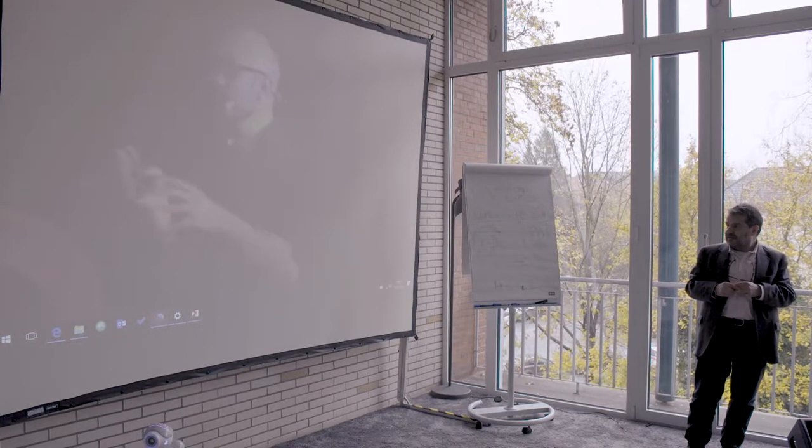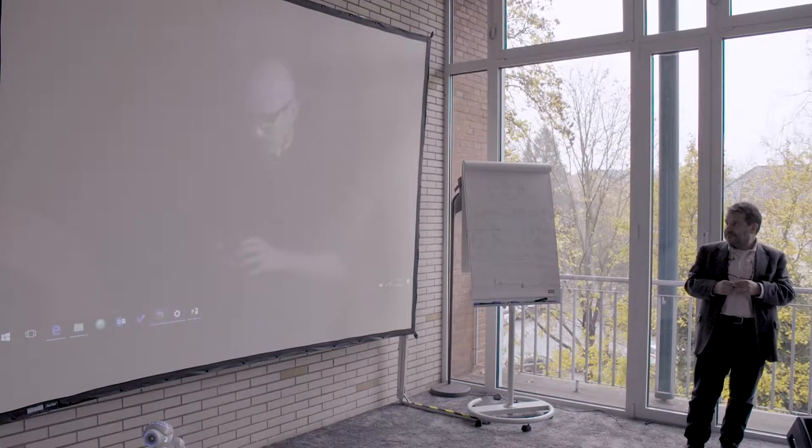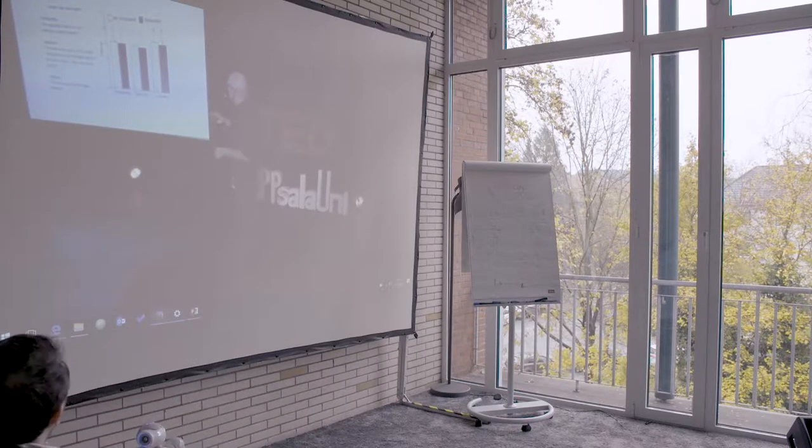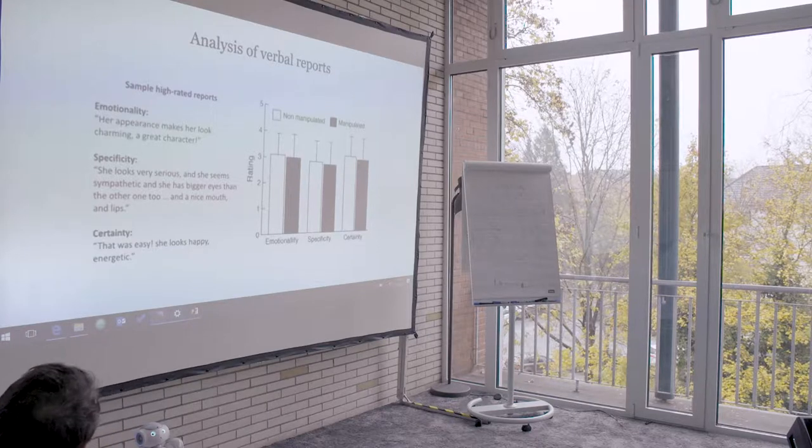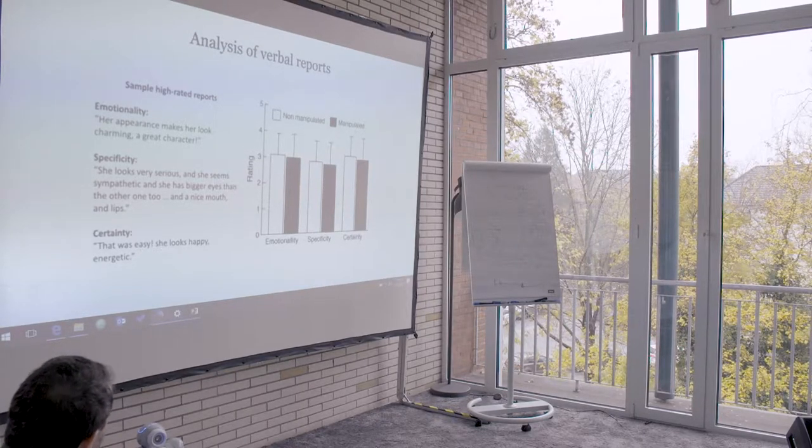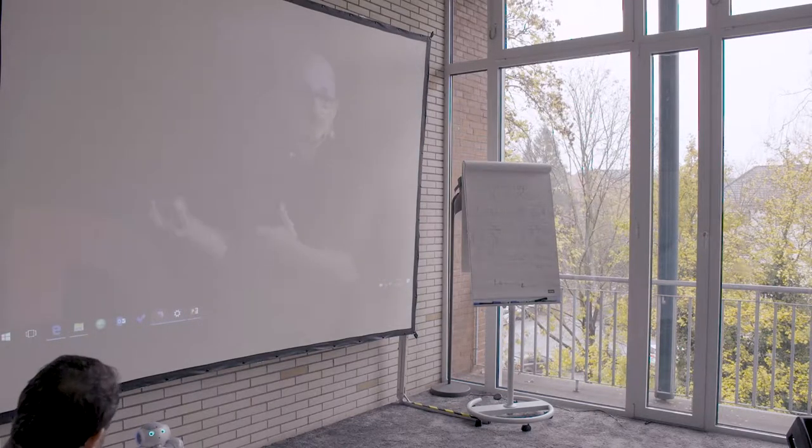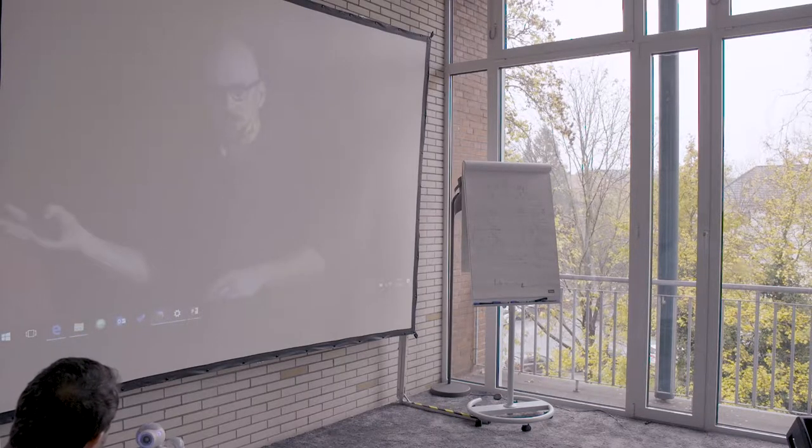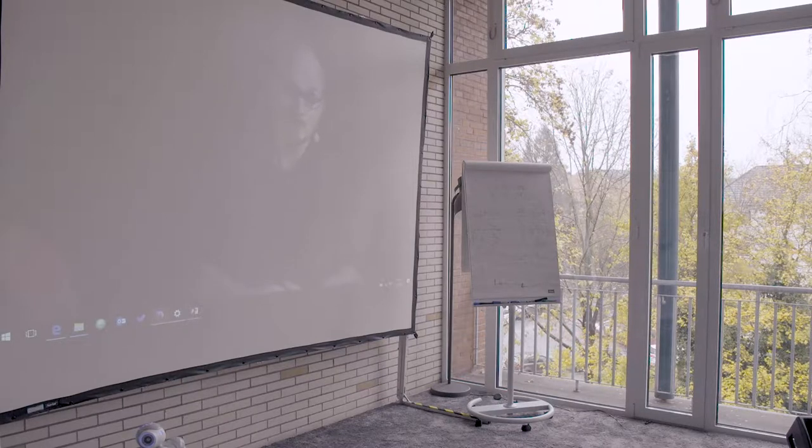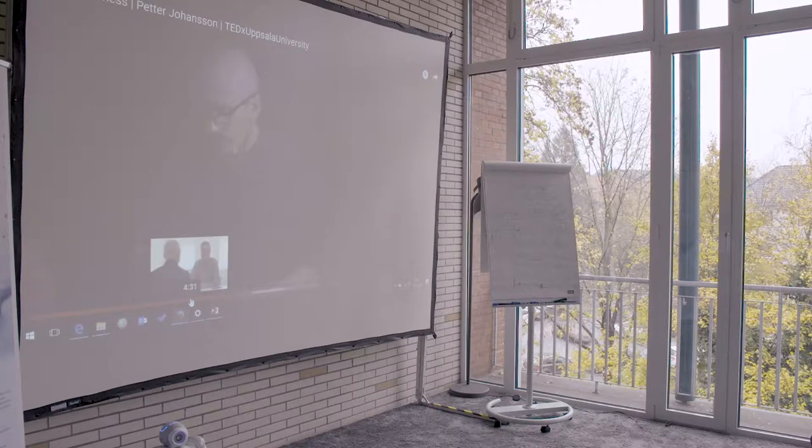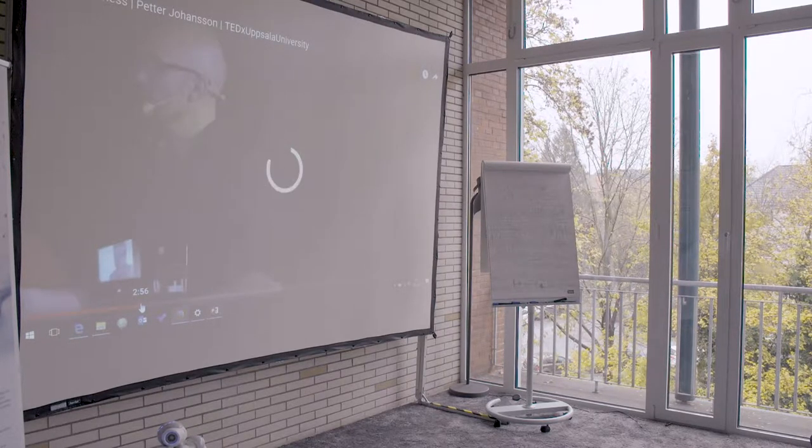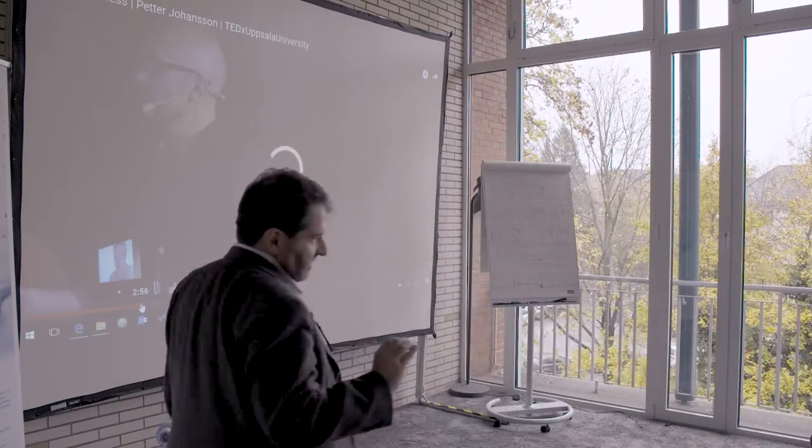If you're interested in self-knowledge, as I am, the more interesting bit is, okay, so what do they say when they explain these choices? So we've done a lot of analysis of the verbal reports in these experiments. And this graph simply shows that if you compare what they say in a manipulated trial with a non-manipulated trial, that is, when they explain the card they chose, we find that they are remarkably similar. So they are just as emotional, just as specific, and they are expressed with the same level of certainty. So the strong conclusion to draw from this, that if there are no differences between a real choice and a manipulated choice, perhaps we make things up all the time.